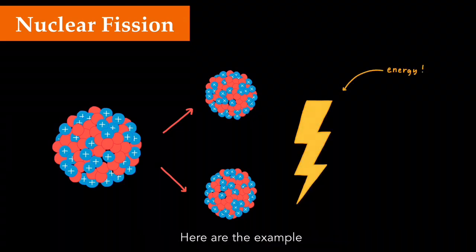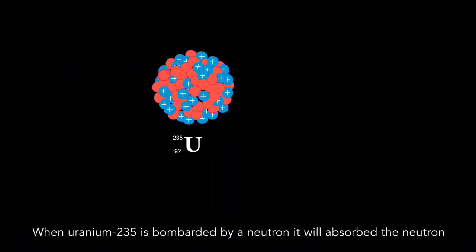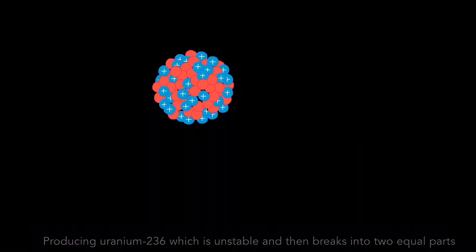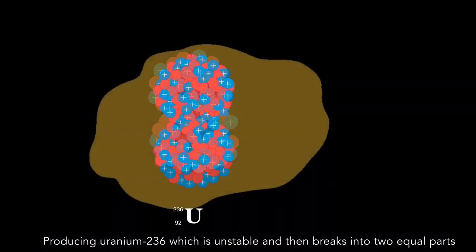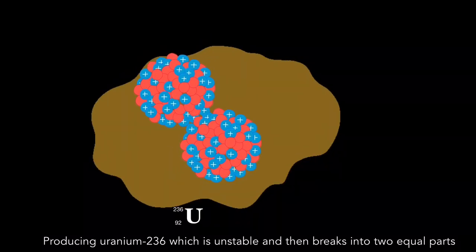Here are the examples. When uranium-235 is bombarded by a neutron, it will absorb the neutron, producing uranium-236 which is unstable and then breaks into two equal parts.